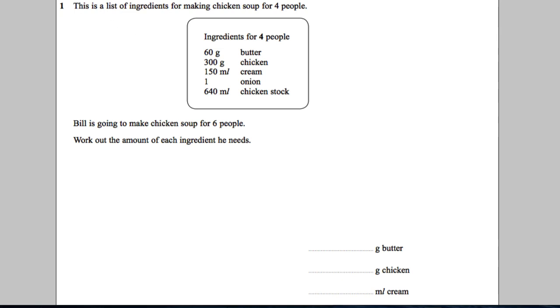Question 1. Let's get the highlighter out. This is a list of ingredients to make chicken soup for four people.